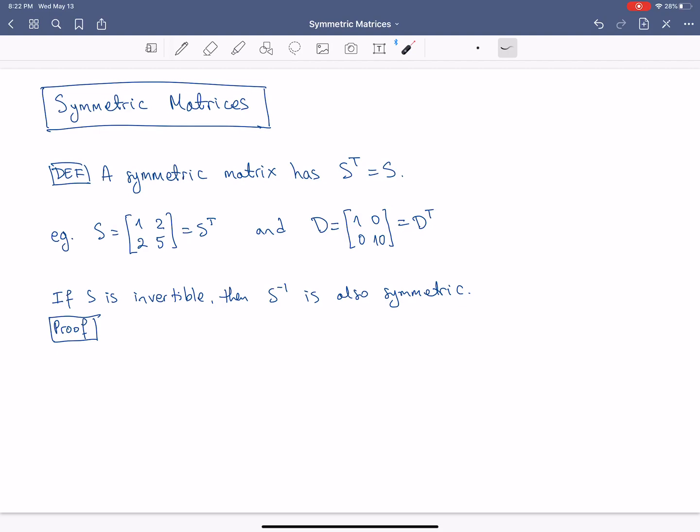Here you have a typical example of a symmetric matrix. Any diagonal matrix is also symmetric because everything above the diagonal is zero and everything below the diagonal is also zero.